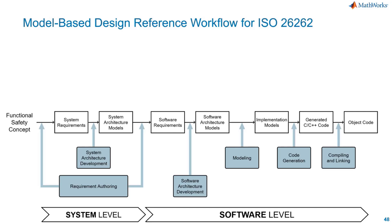On the software level, we will have more detailed design. We will derive software requirements from the system requirements, which contain much more details. Associated with the software requirements, we should also have a proper software architecture model, followed by implementation models. The implementation model is still a similar model but contains all the details, which is ready for code generation. The next step is that we generate C and C++ code for embedded applications and compile it as object code.